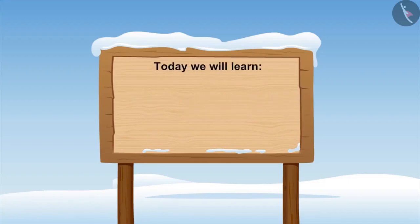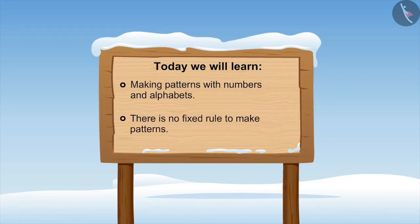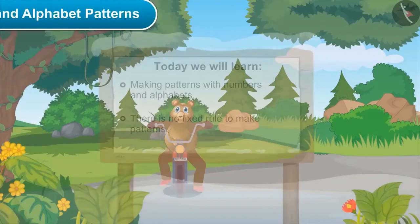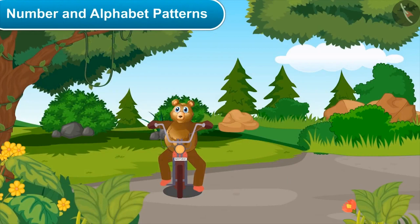Patterns part one. Today we'll learn about making patterns from alphabets and numbers and that there is no fixed rule for creating such patterns. We can easily make them by using our own rule. Oh, why is Bholu playing horn in the middle of the road by stopping his motorcycle?